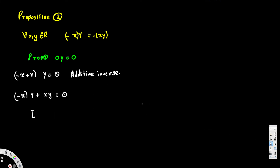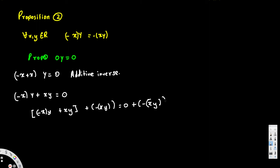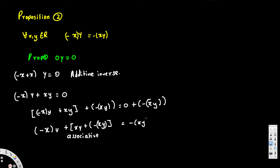I'm going to mention each axiom so you can refer to my other video. So we have negative x times y plus xy, and we add negative xy to both sides, giving negative x times y plus xy plus negative xy equals zero plus negative xy. Now applying the associative law, we can swap the brackets: negative x times y plus (xy plus negative xy). This step is by the associative law.